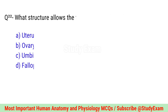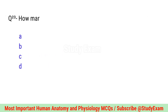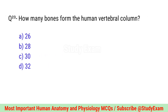Question number twenty-two. What structure allows the fetus to receive oxygen and nutrients? Correct option is C. Umbilical cord.